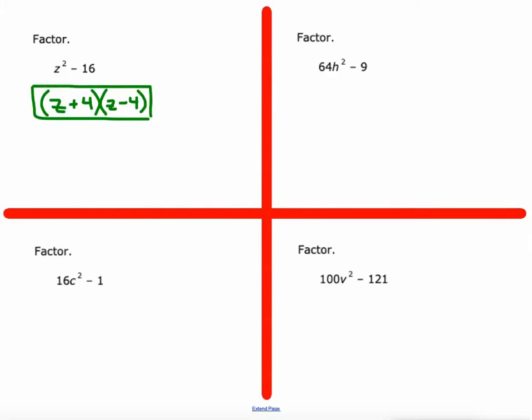I'll do one rectangle diagram just to prove it here. Z plus 4 times z minus 4. Z times z, z squared. Z times negative 4, negative 4z. Z, 4 times z, 4z.